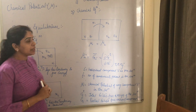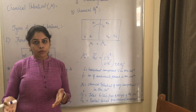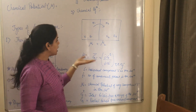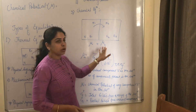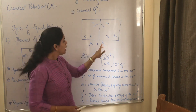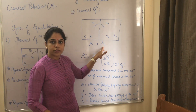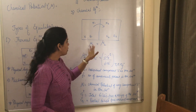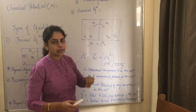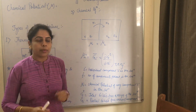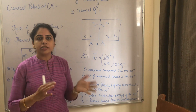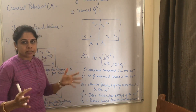Now let's talk about chemical equilibrium. In this, particles tend to flow from high chemical potential to low chemical potential, and this continues until mu1 is equal to mu2. mu1 is the chemical potential of system 1 and mu2 is the chemical potential of system 2. Once the chemical potential of both systems becomes the same, the system is in chemical equilibrium, meaning there are no further chemical reactions taking place.